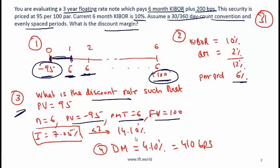Double that to get the annual number and you will get 14.10%. Step 4 then is to come up with the discount margin. The discount margin is simply the difference between this rate, 14.10%, and KIBOR. So the discount margin is 4.1%, in basis points that is 410 basis points.